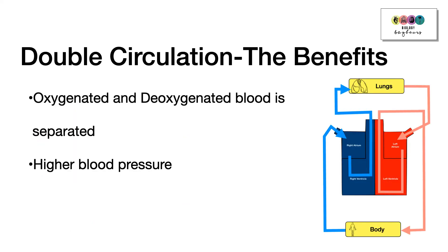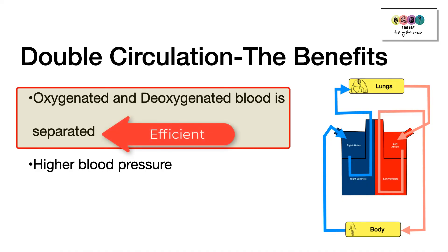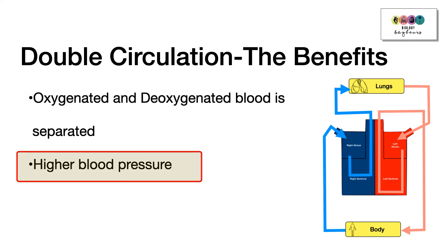So what are the benefits of double circulation? Firstly, oxygenated and deoxygenated blood is separated and pumped separately which is much more efficient, and this also facilitates higher blood pressure. This higher blood pressure is needed to ensure blood reaches all parts of the body.